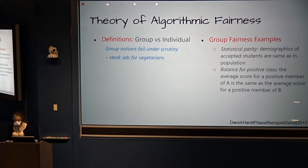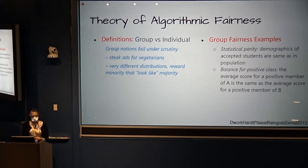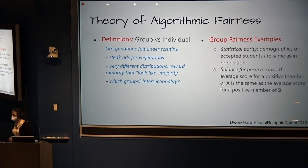First of all, they can be specious. You might require that I advertise equally to groups A and B for my steakhouse, but if I send the ads to the vegetarians in A and to everybody in B, then clearly I'm going to have a B-heavy clientele at my restaurant. The distributions of the populations in the two subgroups could be quite different, and group definitions permit rewarding members of the minority that somehow are more assimilated or that look like the majority. Then there's the question of which groups should we be considering. What about intersectionality? And who gets to decide which groups matter anyway?